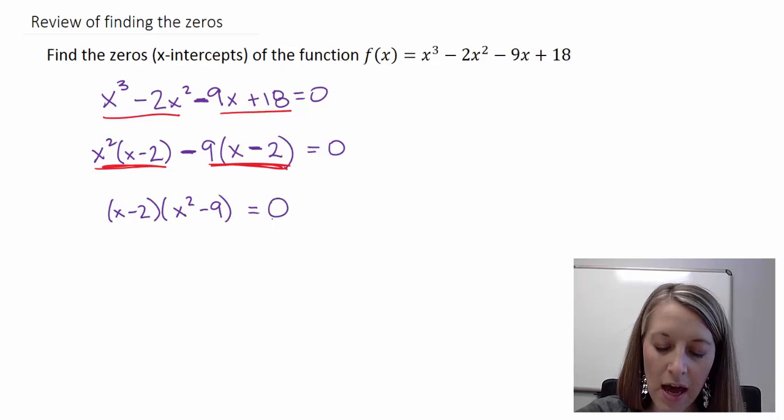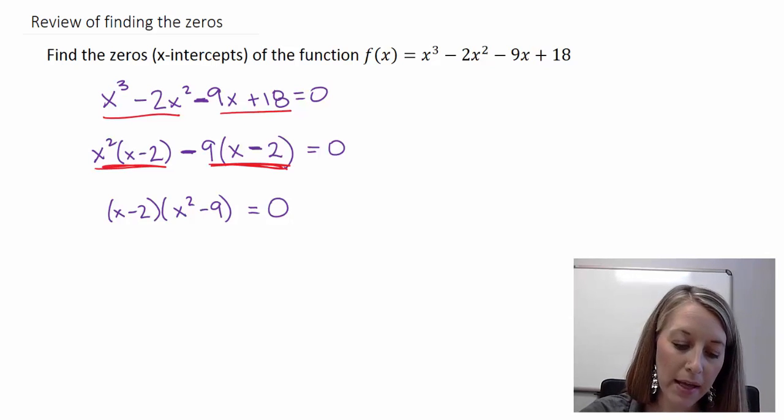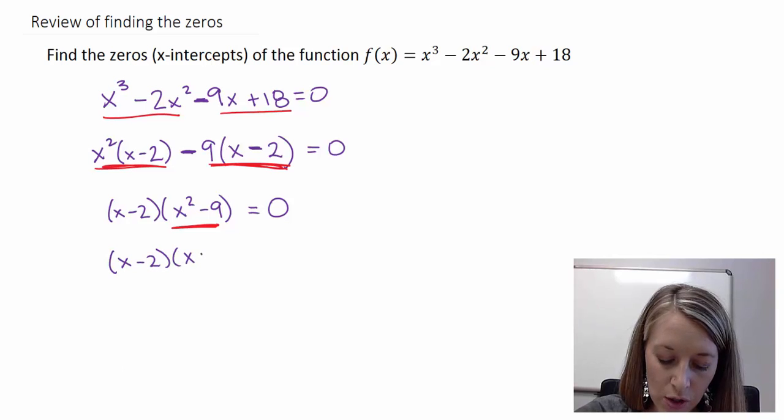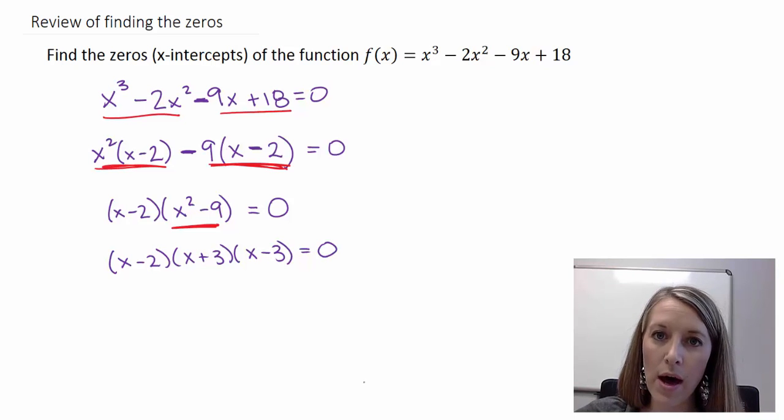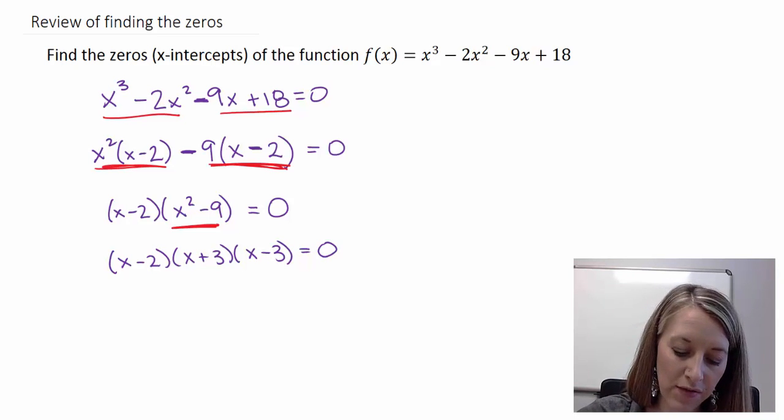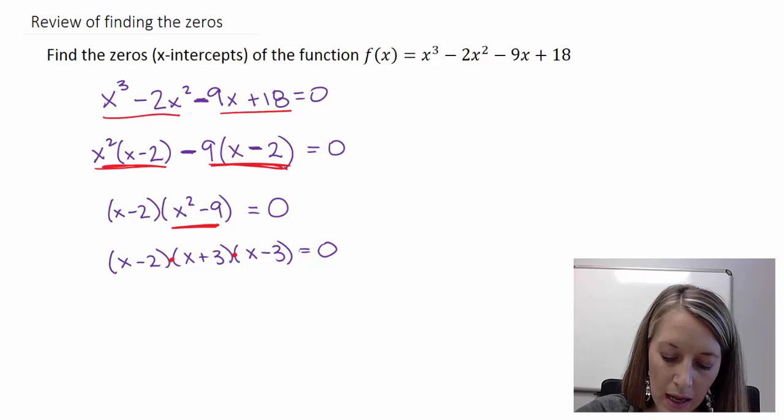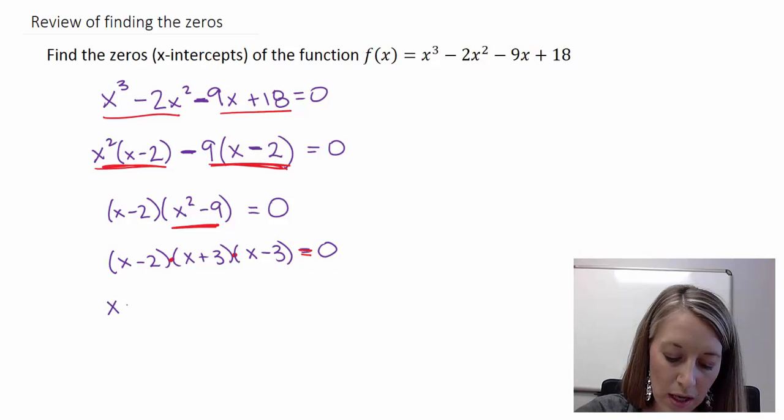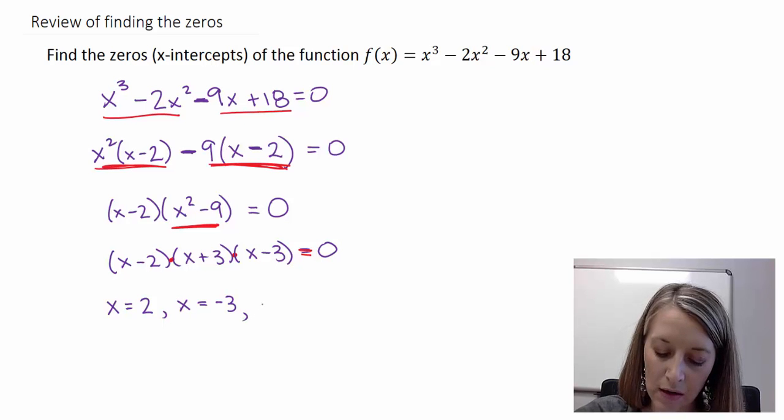But if we look in the second set of parentheses, we have a square minus a square, so that's a difference of squares. We can factor that farther. Copying down my x minus 2, and then factoring this into the conjugates, x plus 3, x minus 3. Now I can actually set all of these factors equal to zero. Since it's multiplied and equal to zero, I can use my principle of zero products. My first one gives me the solution of x equals 2. My next one gives me the solution of x equals negative 3. And my third one gives me the solution of x equals 3.